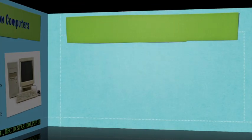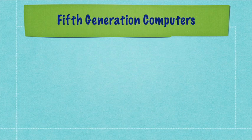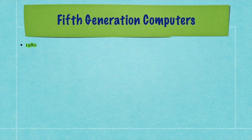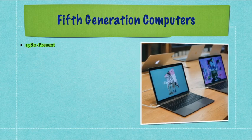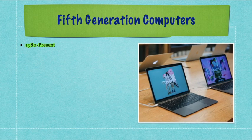After fourth generation, we have fifth generation computers, from 1980 to the present. All current computers are called fifth generation computers. This is the current computer system, which is more organized and mostly application-driven. Your laptops, desktops, notebooks, robots, and supercomputers are all fifth generation computers.